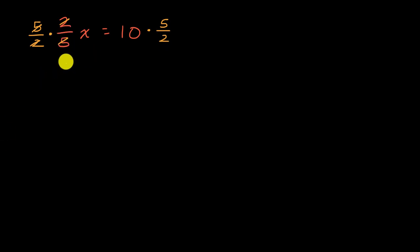So the left-hand side simplifies to, this is all one. So it's just going to be x is equal to, or we could say one x is equal to 10 times five-halves. That's the same thing as 50-halves. I could write it this way. 50 over two, which is the same thing as 25.